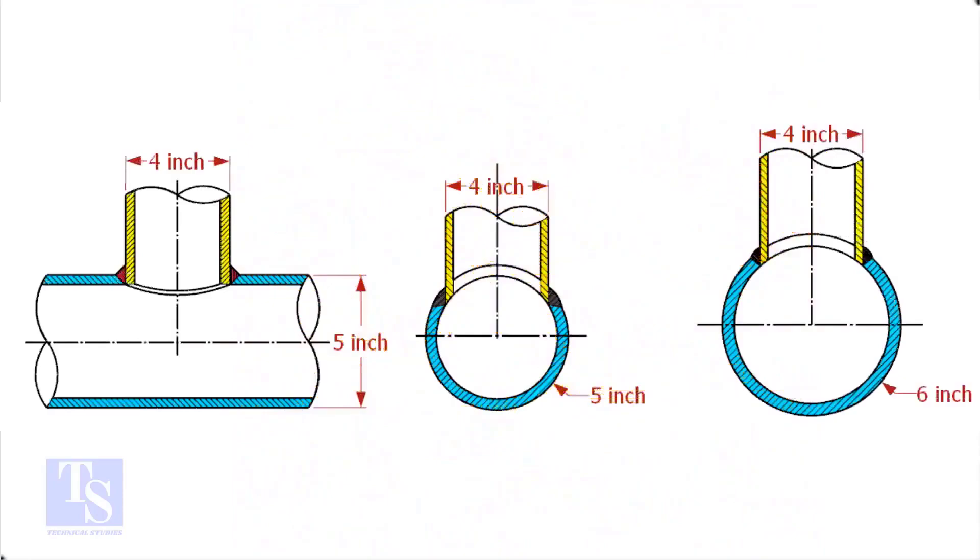In the case of stub-in connections, the branch pipe size is one or more units less than the header size. Suppose both the header and the branch size are the same, a stub-in connection is not possible.